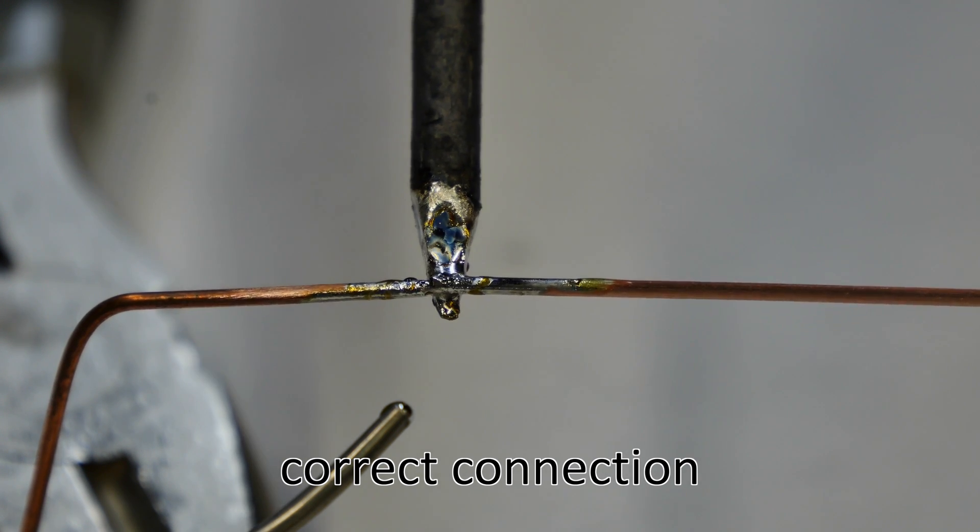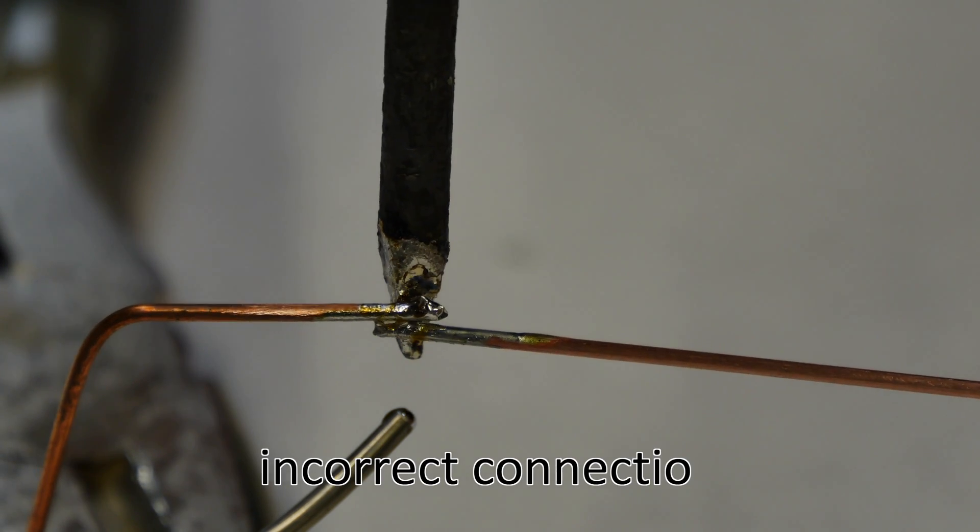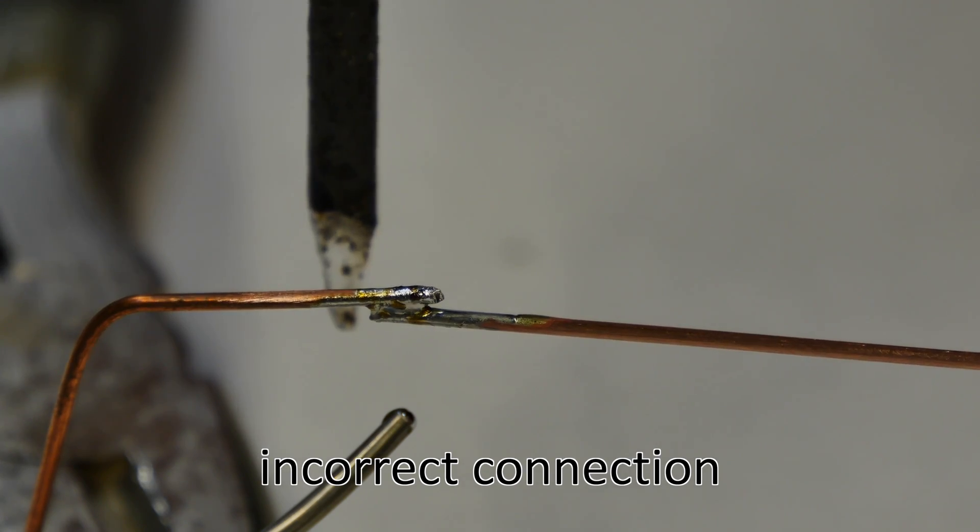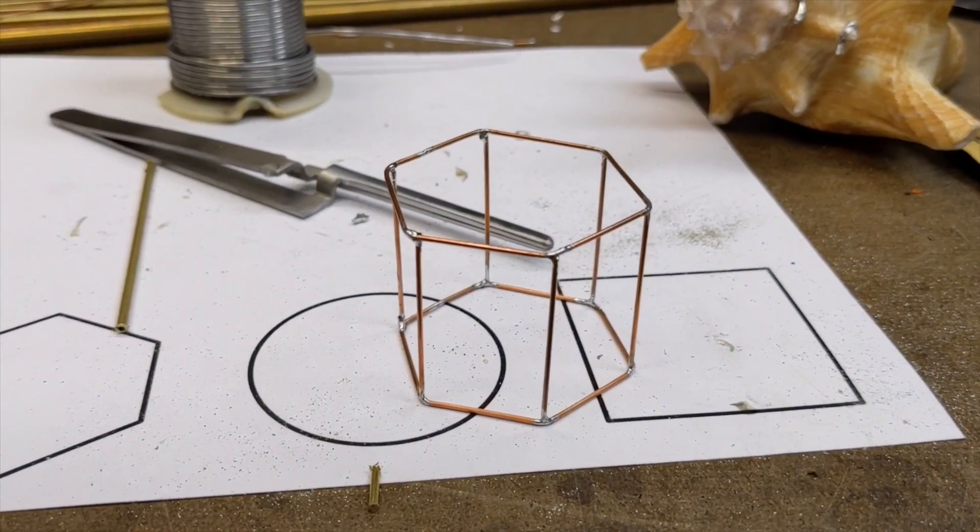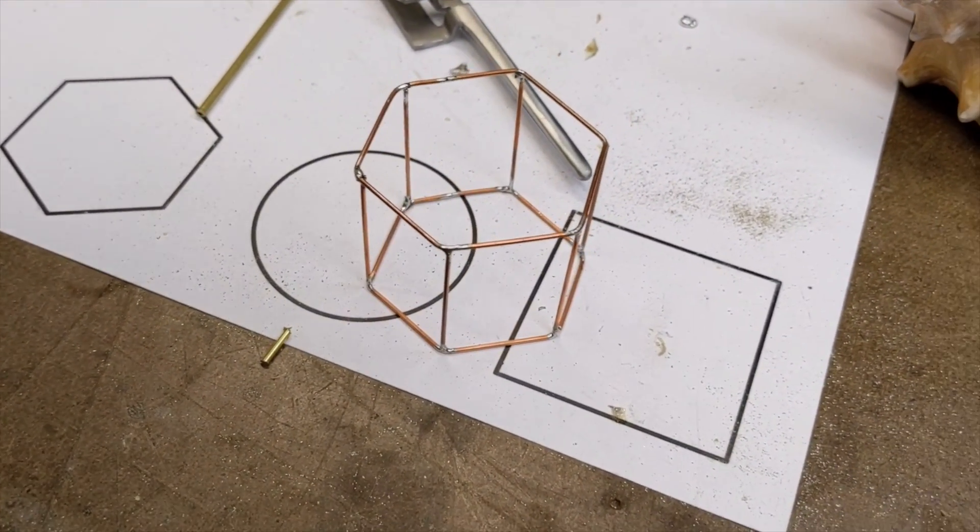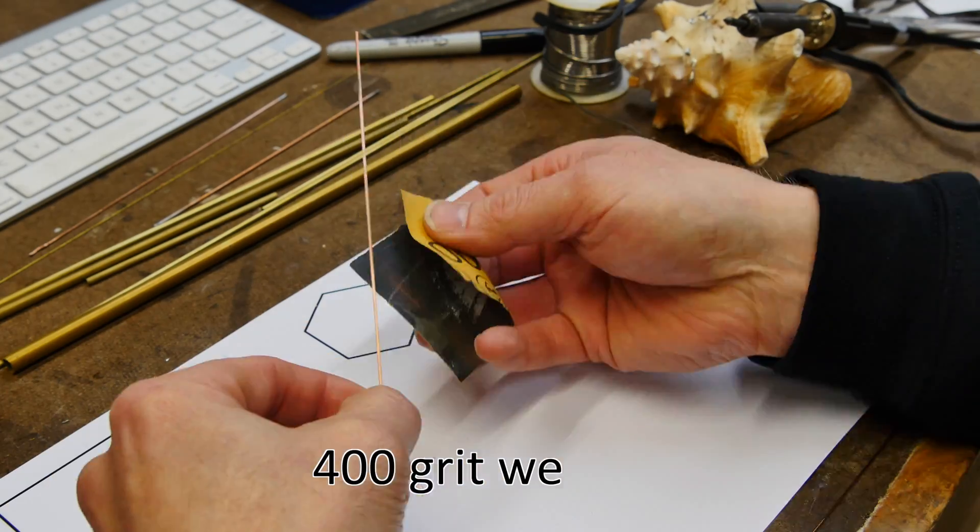So I pre-tin the ends and then this is what you want: you want a butt connection like this so it's just like a line drawing. This is what you do not want: you do not want the copper overlapping like this so that you get a big fat hairy connection right there. That's not ideal. You want everything to be nice and straight just like a drawing.